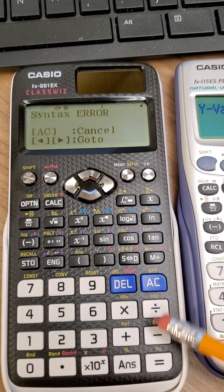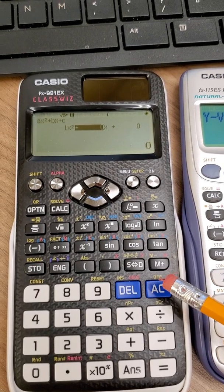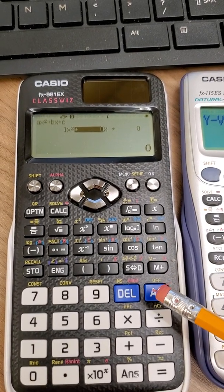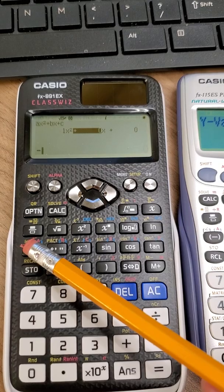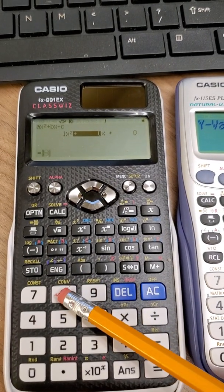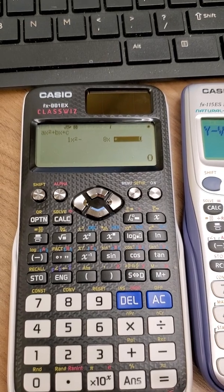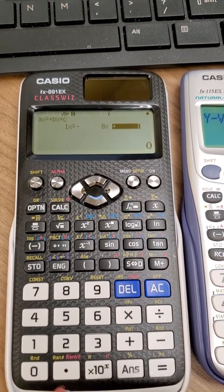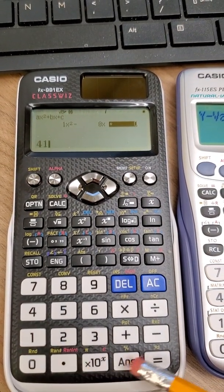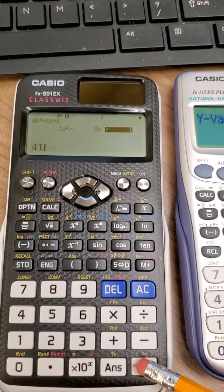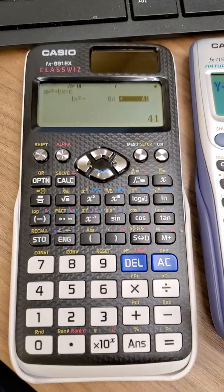Whoops. What did I do? Coefficient of x is negative 8 equals. And the constant was 41. Equals. And if I hit equals again.